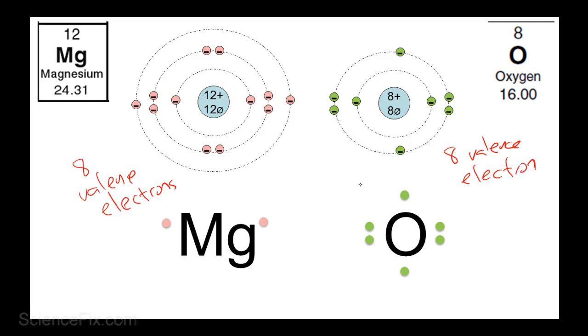So these 2 atoms are unstable, and so something has to happen for them to have a full set of valence electrons. Let's see what happens.